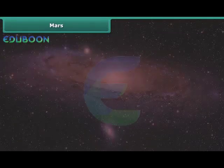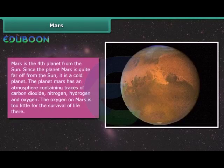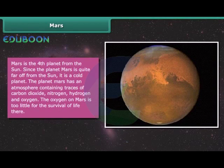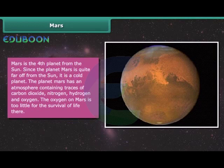Mars. Mars is the fourth planet from the Sun. Since the planet Mars is quite far off from the Sun, it is a cold planet. The planet Mars has an atmosphere containing traces of carbon dioxide, nitrogen, hydrogen and oxygen. The oxygen on Mars is too little for the survival of life there.